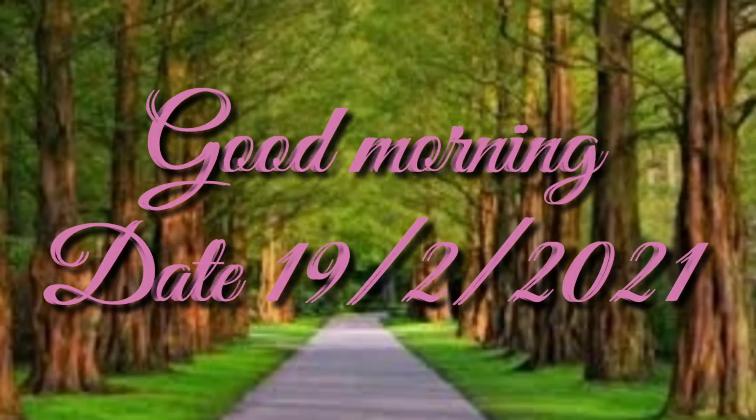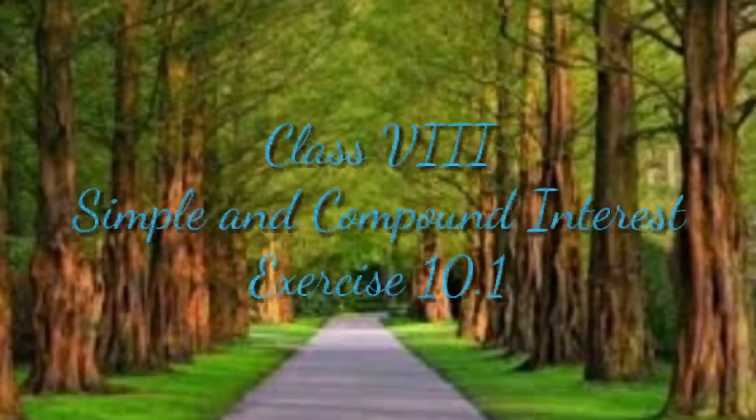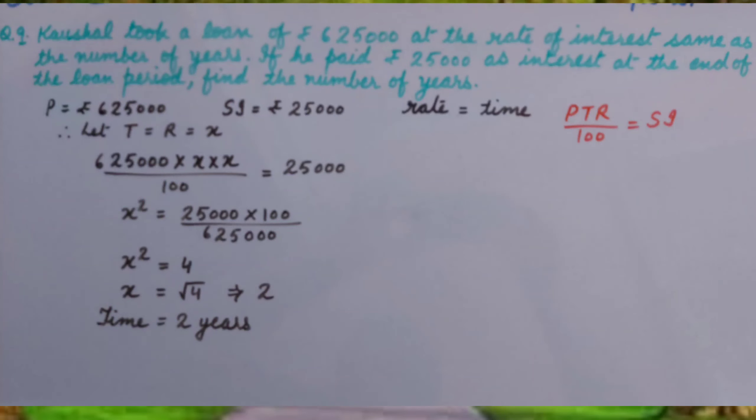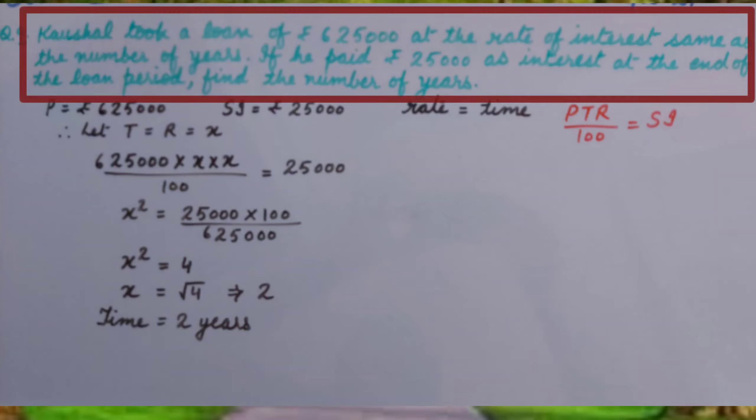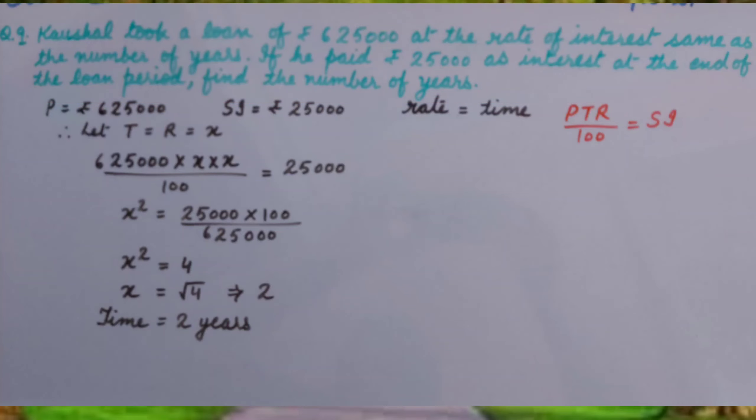Good morning students, let's resume our chapter on simple and compound interest, exercise number 10.1. Question number 9: Kaushal took a loan of rupees 625,000 at the rate of interest same as the number of years. If he paid rupees 25,000 as interest at the end of the loan period, find the number of years.